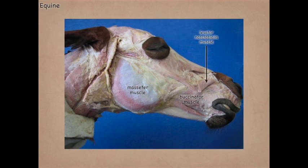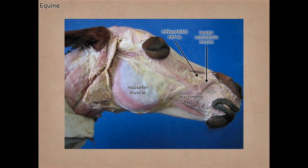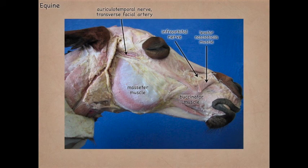The levator nasal labialis has been cut here and reflected downward to show the infraorbital nerve. Over in the temporal region, we're going to see the auriculotemporal nerve and the transverse facial artery — you'll see in a little bit where those come from.